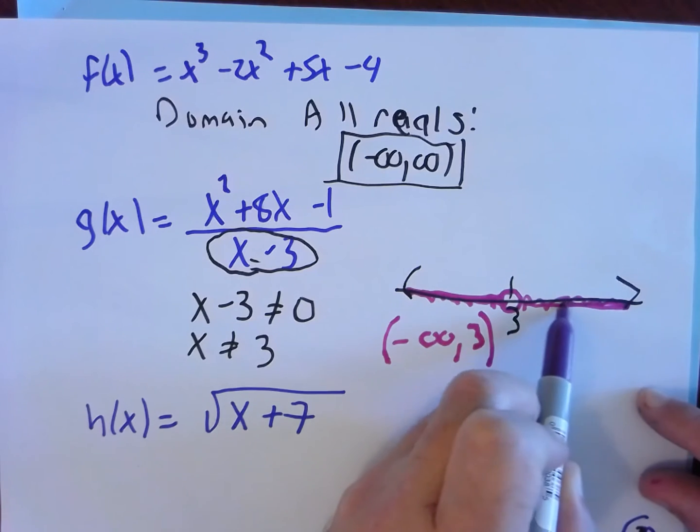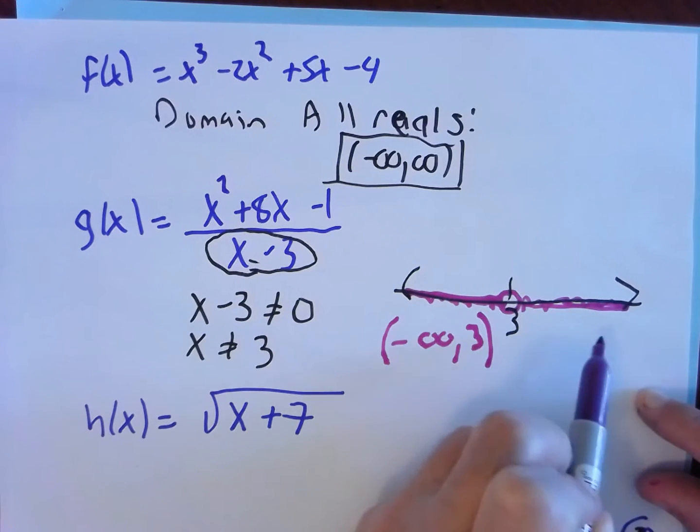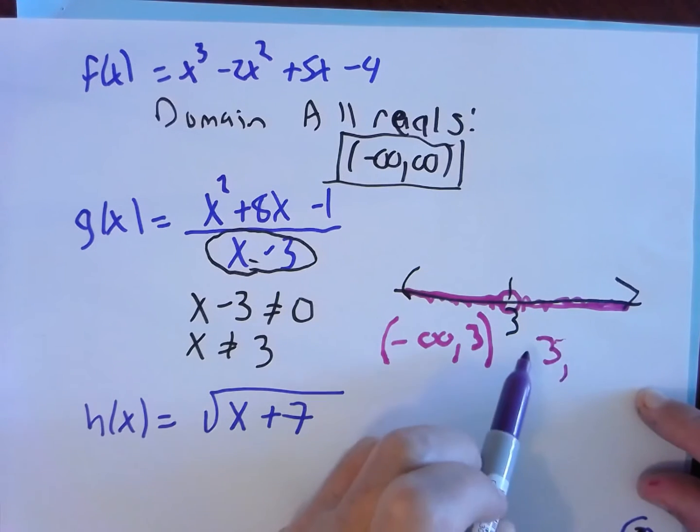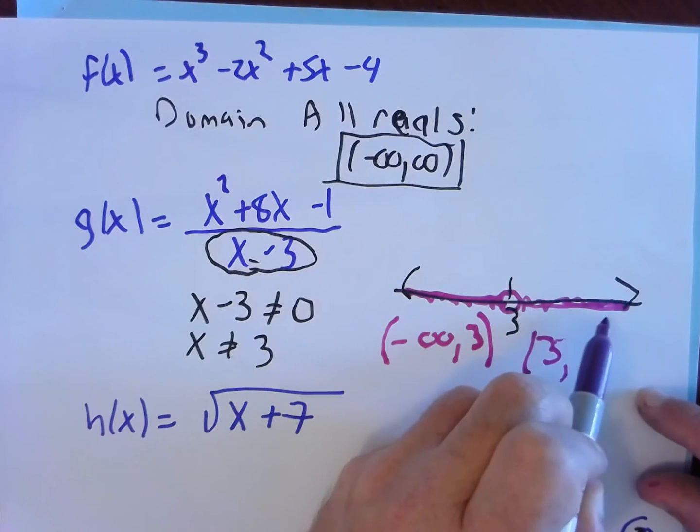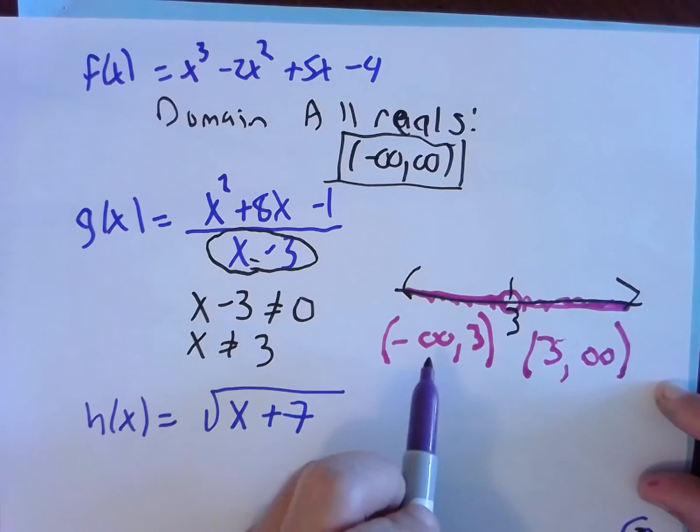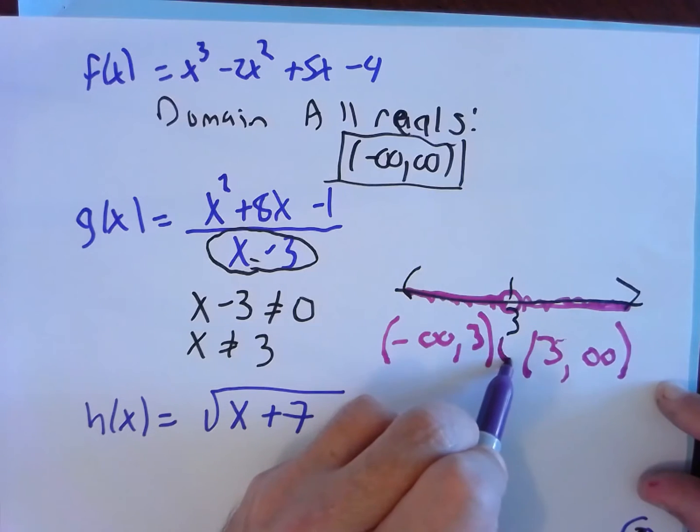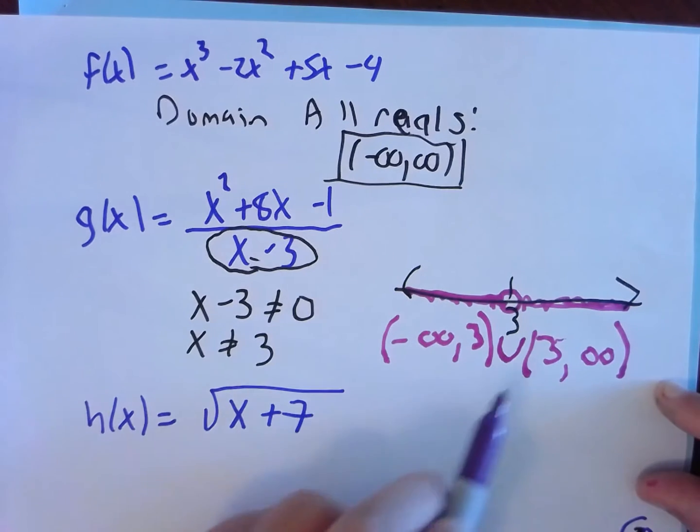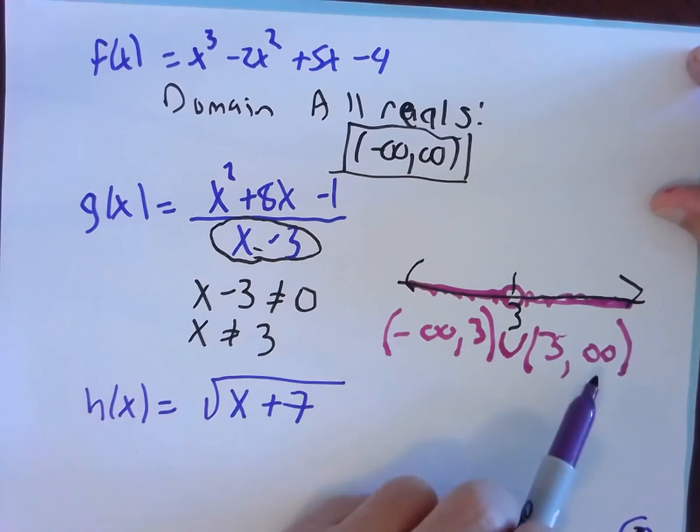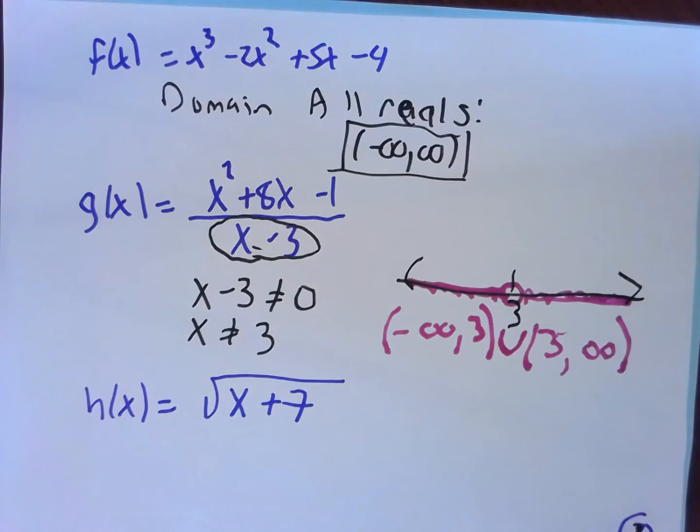Then over here, we have this region. Smaller, comma, larger. The smallest number in this region is a three. I didn't actually touch it though, so parenthesis. Comma, the largest, this goes all the way up to positive infinity. Again, infinity always gets parentheses. And so I have two separate sections of domain. I put a U in between them for union. That stands for union. That's the domain of this function. And that's just a fancy way of saying all real numbers except three.